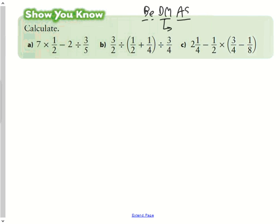For the second question, 3/2 divided by, in brackets, 1/2 plus 1/4, divided by 3/4, the first thing we're going to do, of course, is our brackets. So we're going to keep 3/2 as 3/2, and we're going to keep that division symbol because we're not going to do it yet. And we're going to keep this division symbol over here and the 3/4.